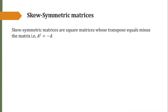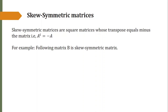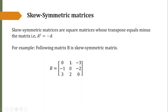Now we see what is a skew symmetric matrix. It is the matrix whose transpose equals the minus of the matrix, that is A transpose is equal to minus A. For example, the following matrix B is a skew symmetric matrix. Every row is the minus of its corresponding column — the first row is minus of the first column, the second row is minus of the second column, and the third row is minus of the third column. Therefore this is a skew symmetric matrix.